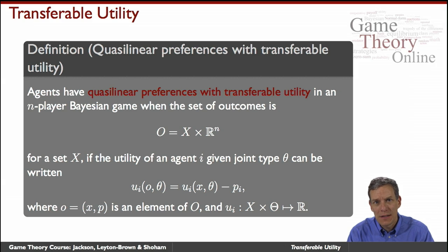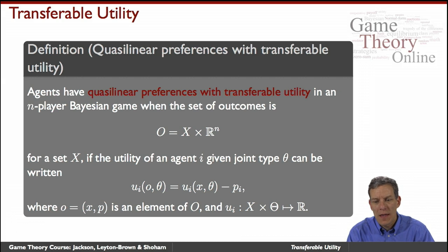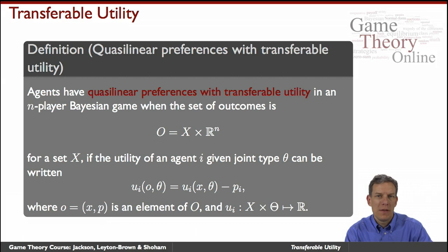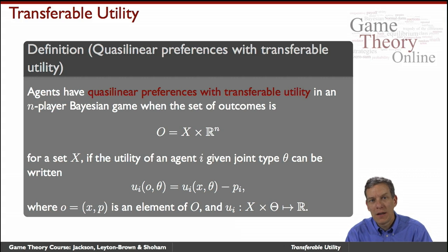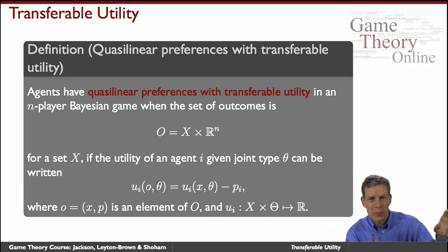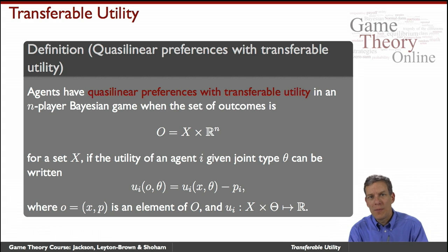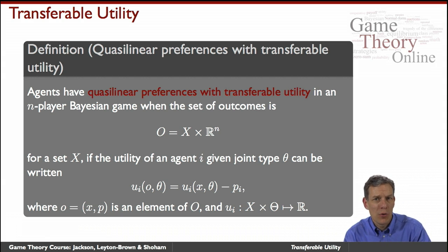What's looked at in these settings are situations where people have what's known as quasi-linear preferences. The idea, before we get into the formal definitions, is that there's something like money — some transferable good — that we can move back and forth between agents, and we know how much that's worth to them and can trade it off versus utility. That gives us a nice private good we can move back and forth — payments in an auction or contributions to a public good — which translates directly into utility numbers. This gives us a lot of power in terms of aligning incentives by making people's payments encapsulate the externalities they're imposing on others.